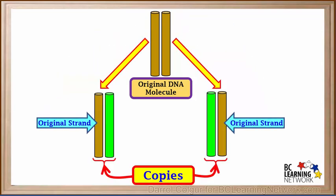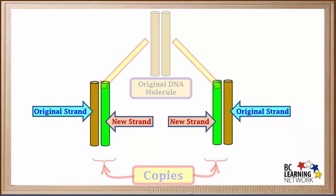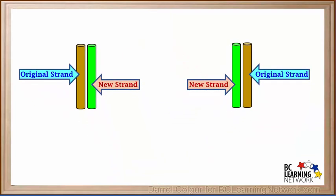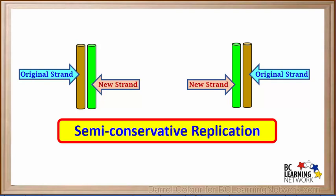When DNA is replicated, each original strand forms one of the strands of each copy. And the new strands form the second strand of each copy. So each new DNA molecule is half old and half new. This is what is known as semi-conservative replication. The strands of the original DNA are conserved or kept as they form half of each new DNA molecule.